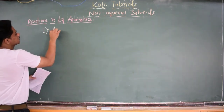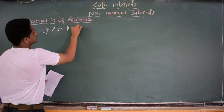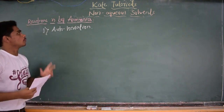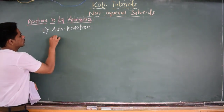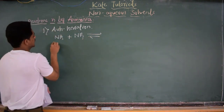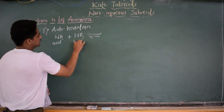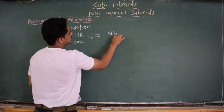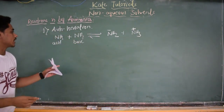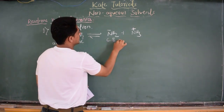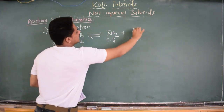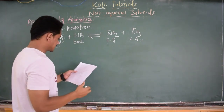The first reaction type is autoionization. So, autoionization of liquid ammonia: one mole of ammonia and another mole of ammonia — one acts as acid giving H⁺ (proton) and the other acts as base accepting that proton. Once it gives H⁺ it becomes the conjugate base, and once it takes H⁺ it becomes the conjugate acid. This is nothing but autoionization.